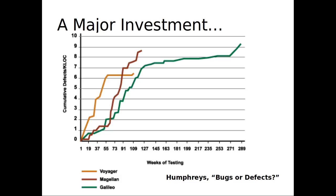Over time, there's kind of diminishing returns. You may early on find a bunch of defects, but then it kind of starts to plateau out. You see that in this one as well. This red one shows a little bit of sign of abating, but it's not quite reaching the same level of plateau. More defects are found early on — that's another key takeaway.